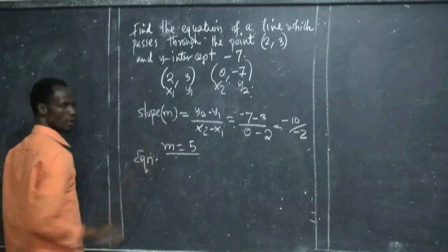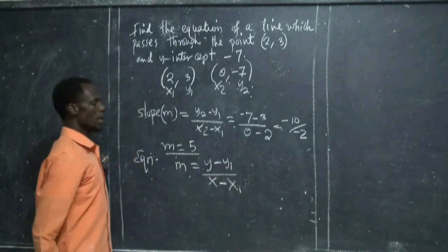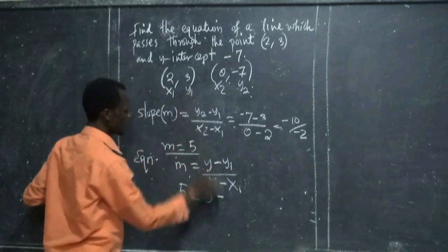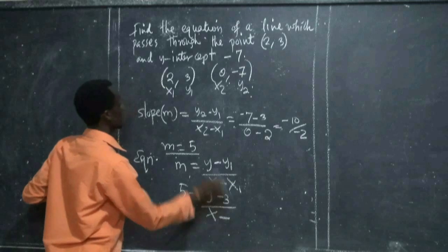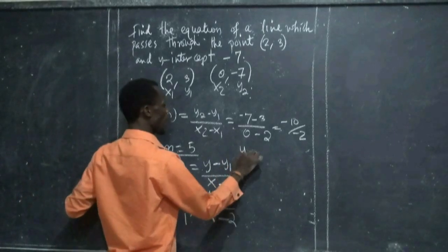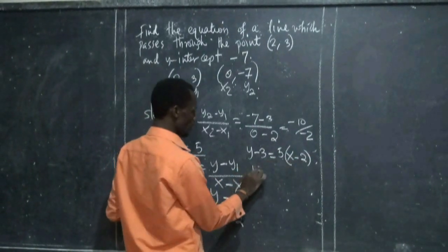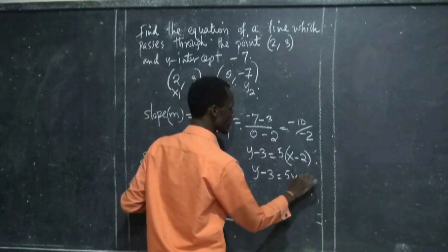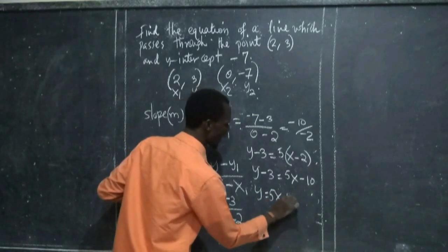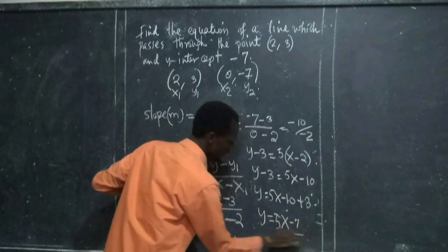From here, we can determine our equation. Our equation is determined by taking slope equals y minus y1 over x minus x1. Our slope is 5, y is not known, y1 is 3, x minus x1 is x minus 2. Cross multiply. Then you have y minus 3 is equal to 5 times (x minus 2). Open the bracket: y minus 3 is equal to 5x minus 10. Take the 3 to the other side: y is equal to 5x minus 10 plus 3.